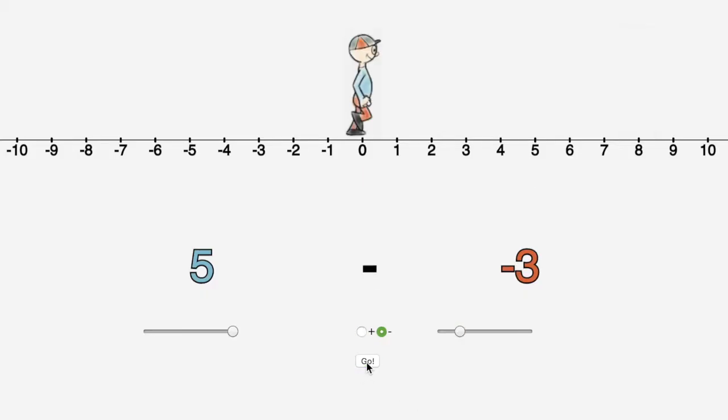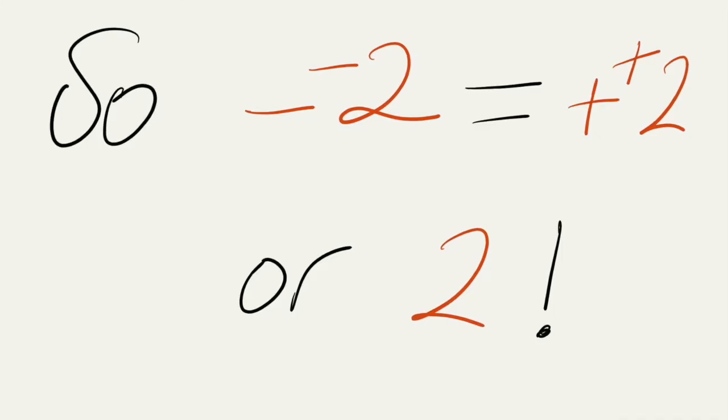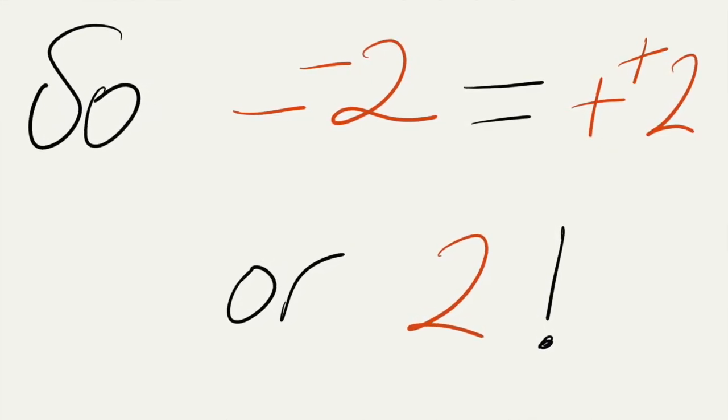Five subtract negative three. Stefan looks right and moves forward five. He then looks left for the negative three and walks backward as it is subtraction. The answer is eight again. So subtracting a negative is the same as adding a positive.